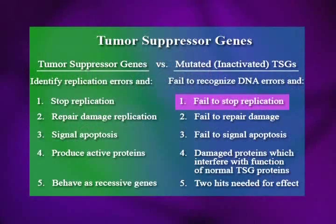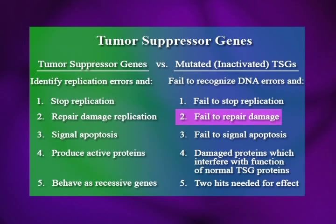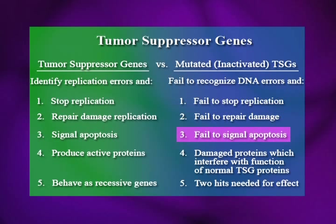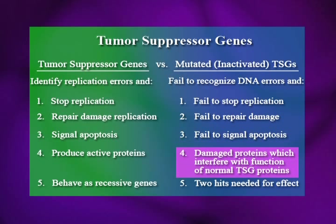What happens in the mutated form: it fails to recognize errors, fails to stop replication, fails to repair the damage, does not signal for apoptosis, and then damaged proteins can interfere with the normal proteins.